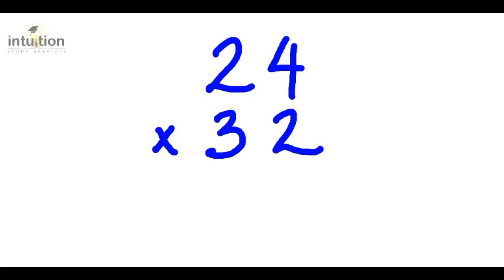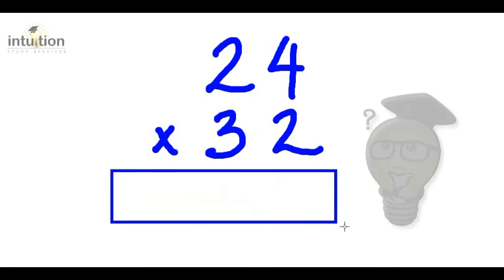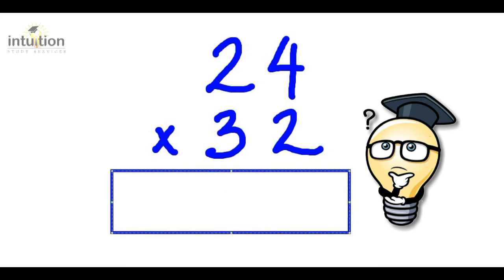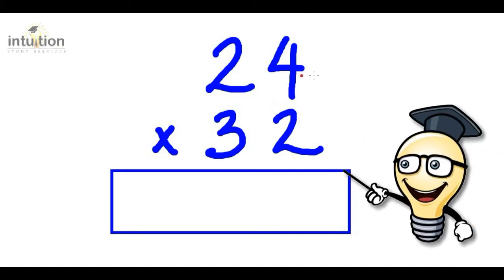Okay, so let's have a look at another example. Let's consider 24 times 32. Let's see how quickly you can do that. Give it a go. Okay, so let's use the down cross down method to get the answer again. So in the right hand column or the units column, we multiply downwards, so 4 times 2, which is 8.